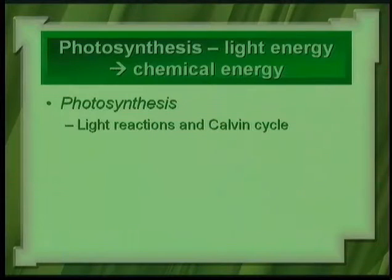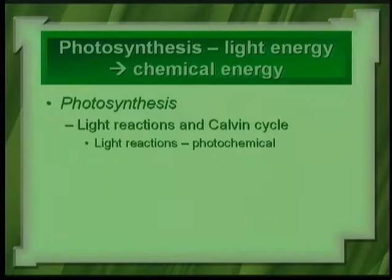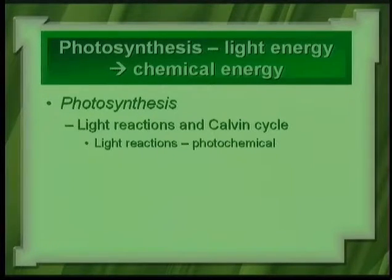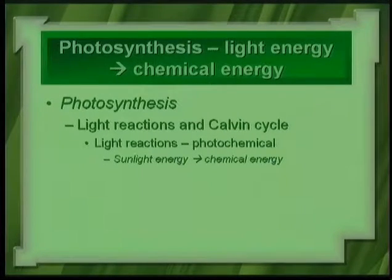The two phases of photosynthesis are called the light reactions and the Calvin cycle. These are two parts of the whole process we know as photosynthesis. The light reactions are the photochemical part — that has to do with absorbing light and changing it to chemical energy, taking sunlight energy and converting it into chemical energy.